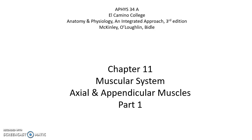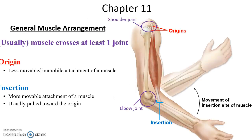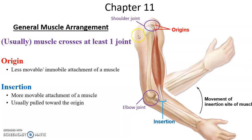Chapter 11, Muscular System, Axial and Appendicular Muscles, Part 1. Muscles have a general arrangement: they are usually attached to bones and cross at least one joint, so part of the muscle is on one side of the joint and on the other side — in some cases a muscle crosses two joints. The origin is where the muscle attachment is less mobile, so little to no movement occurs at the origin. On the other side of the joint is the insertion, which is the movable end where movement occurs.